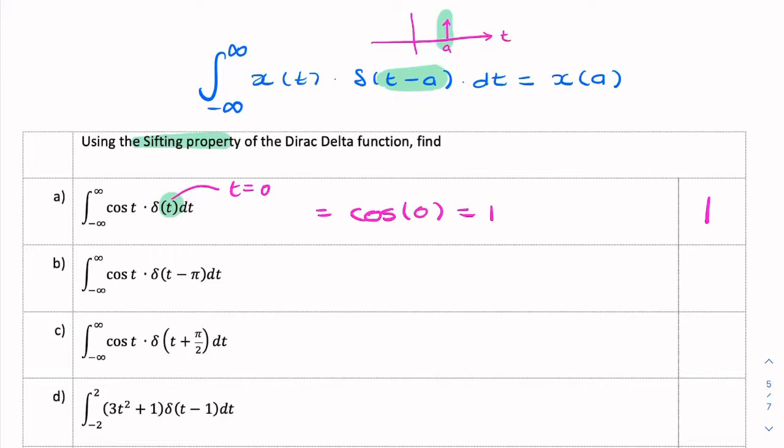Second example, again we have some function and a shifted impulse. This is my x and this is my impulse. If you take the argument of the impulse and equate it to zero, so t minus π equals zero, t equals π. So that simplifies to x of π, and the function x is cosine, so it's simply cosine of π. Cosine of π is negative one.